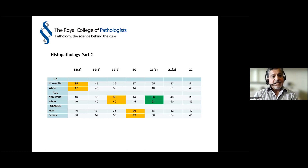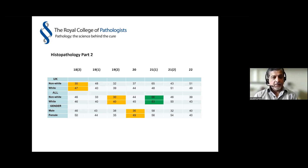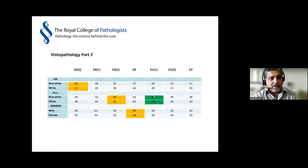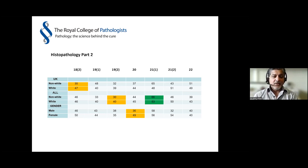In histopathology Part 2, there is less differential attainment. Our Part 2 in histopath is a practical exam involving looking at slides, but there are also elements of oral exams and long-answer written questions. It's pleasing to see that in the UK there hasn't been a difference between non-white and white candidates. There was a spurious result in Spring 2021 where non-white candidates performed better overall, possibly because overseas candidates delayed by COVID had extra preparation time.